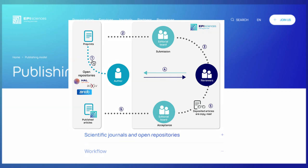Researchers submit a preprint that an editorial board examines and forwards to reviewers. The article passes new rounds of evaluations. If accepted by the editorial board, the preprint is deposited into an open repository and published in an Episciences journal accompanied by a DOI.